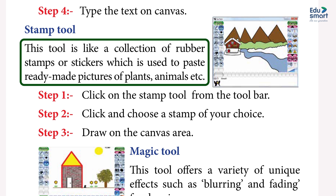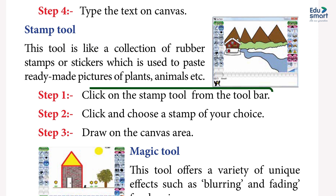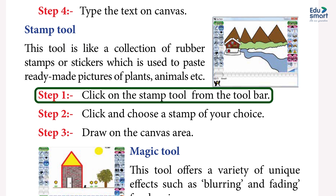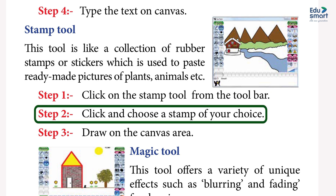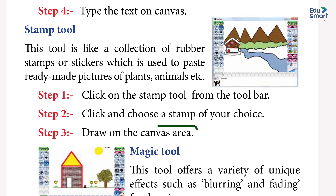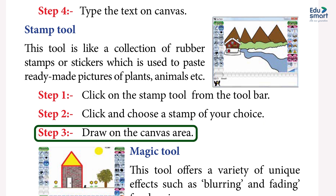Stamp tool — this tool is like a collection of rubber stamps or stickers, used to paste ready-made pictures of plants, animals, etc. Step 1: click on the Stamp tool from the toolbar. Step 2: click and choose a stamp of your choice. Step 3: draw on the canvas area.